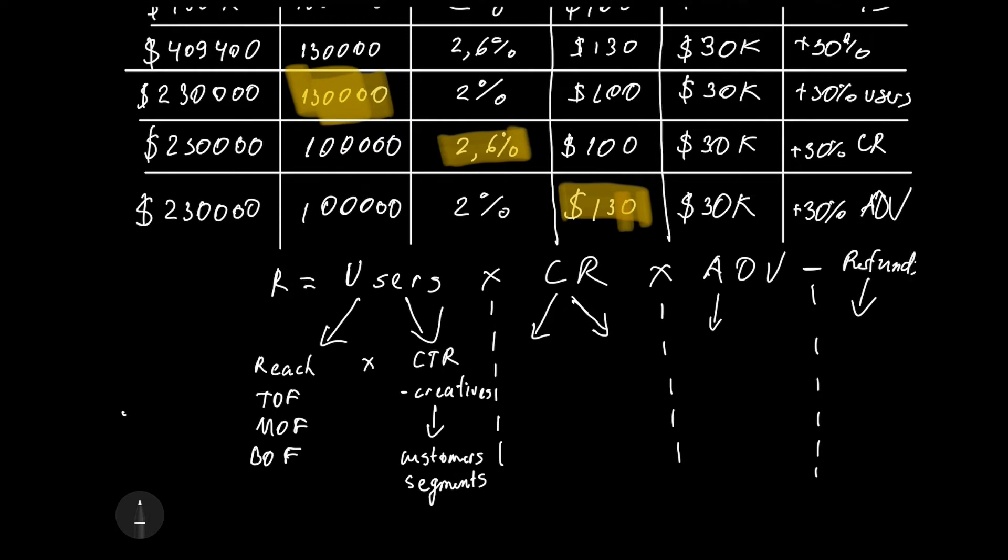For conversion rate there are also two main pieces: conversion rate optimization and our funnel. For our funnel what we should monitor daily is our product views, add to carts, checkout and transactions. Here we need to monitor the difference between each step.